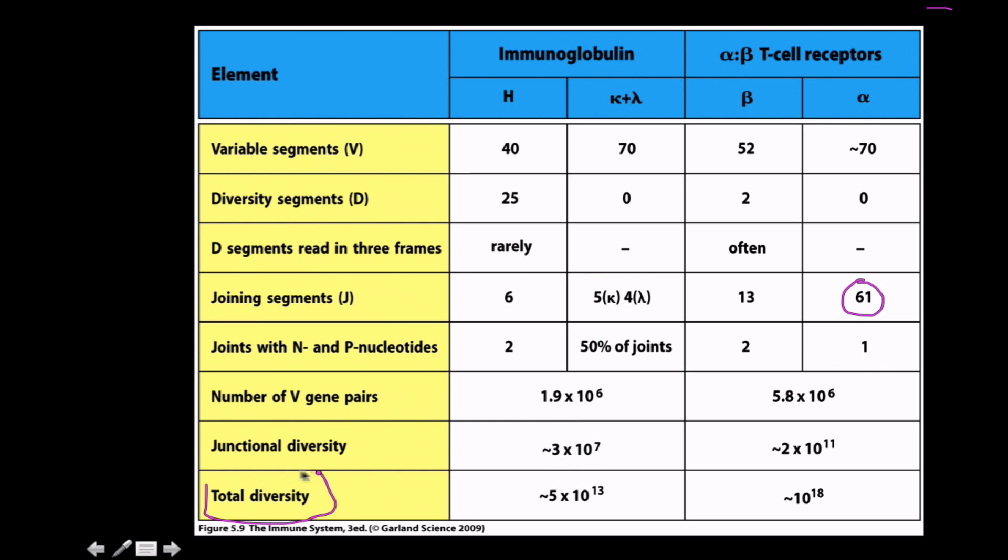The total diversity for an immunoglobulin is pretty large and these are all just approximation numbers. It's five orders of magnitude greater in terms of variation than that of the immunoglobulin.